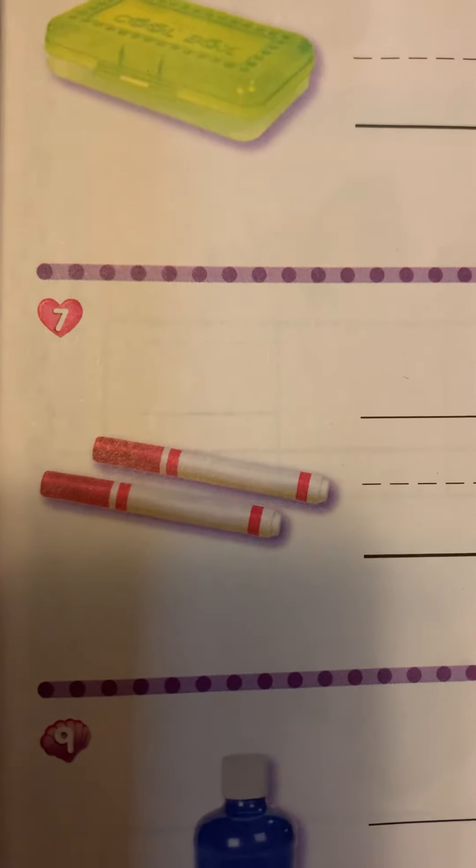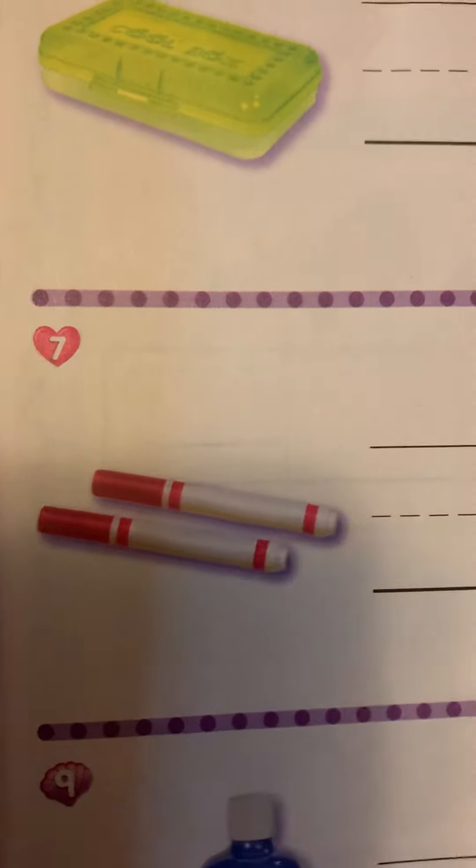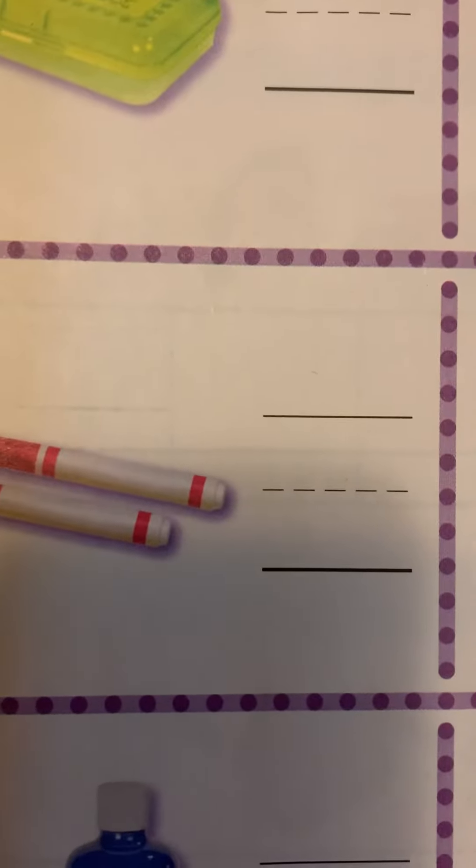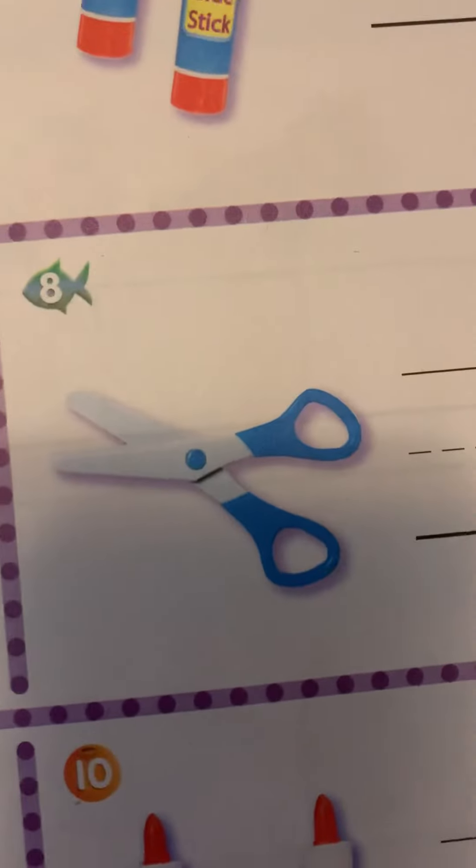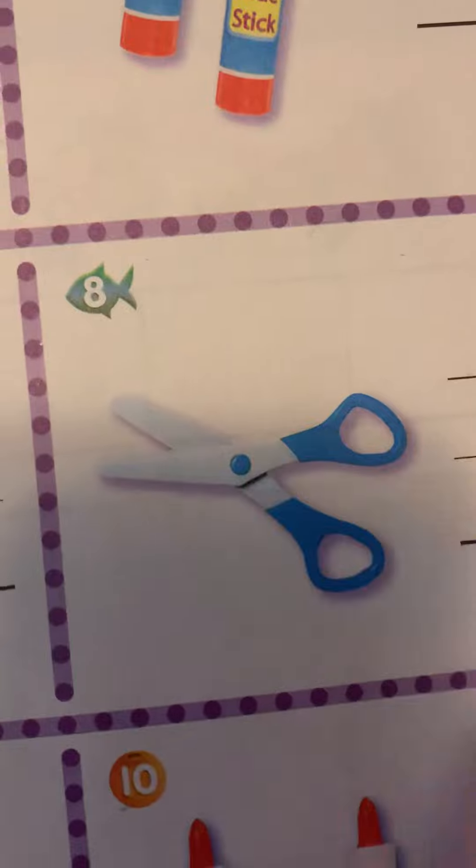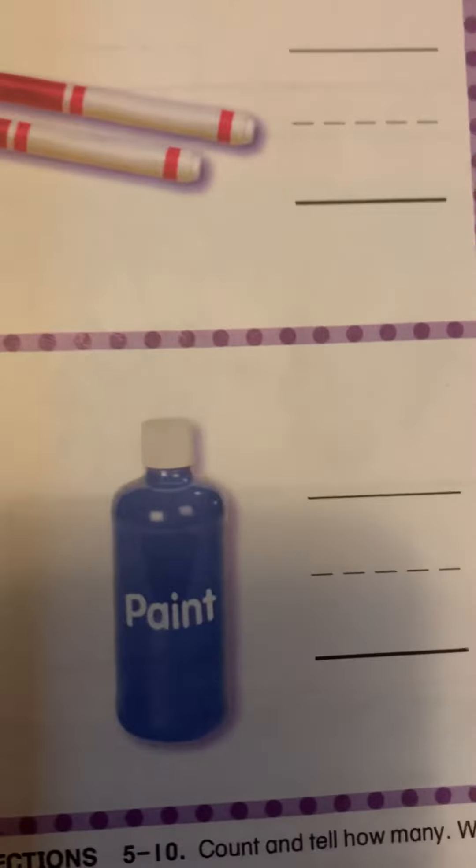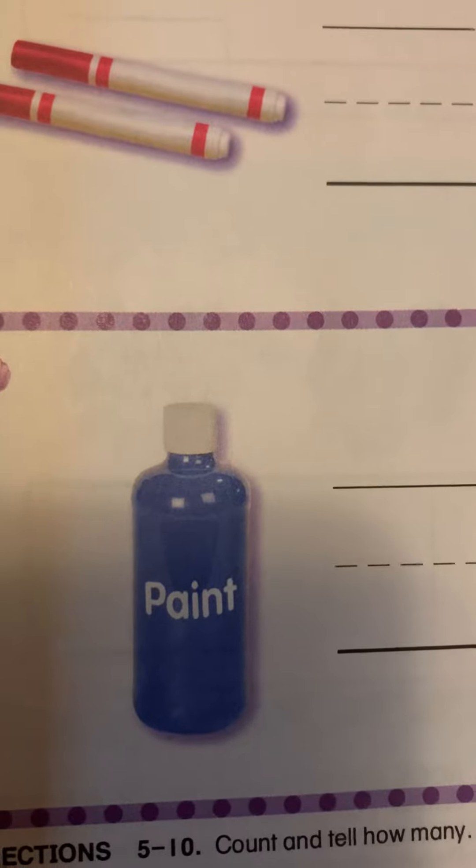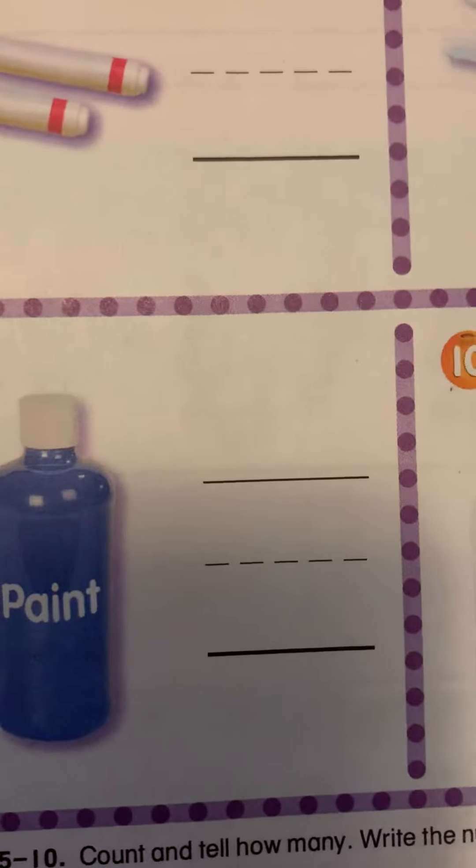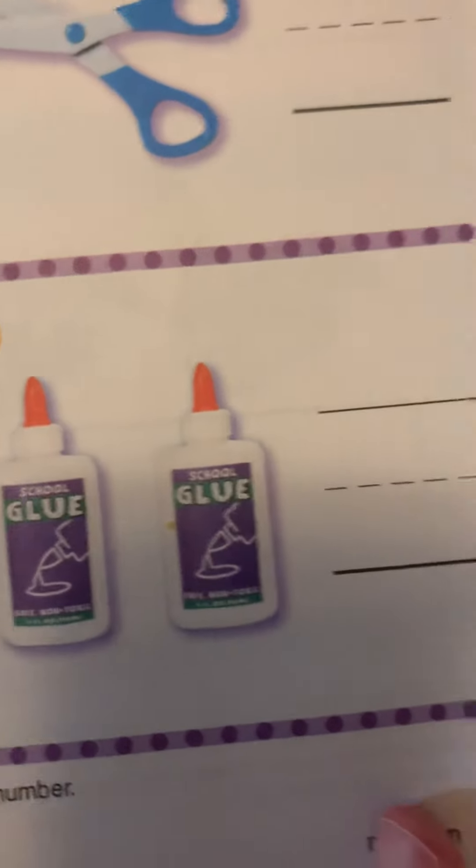How many markers? One, two. Write the number two. How many scissors? One. Write the number one. How many paint bottles? Count it. Write it. How many glue sticks? Count it. Write it.